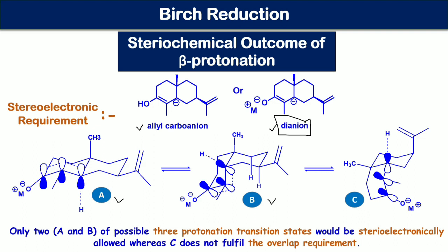In the dianion, the negative charge at the beta carbon is conjugated with the pi system. In transition states A and B, the orbital of the developing C-H bond overlaps with the remainder of the pi system. However, in transition state C — the flipped version of B — the orbital overlap requirement is not fulfilled due to lack of orientation of the p orbitals. So C is not stereoelectronically allowed, leaving only A and B to proceed further.